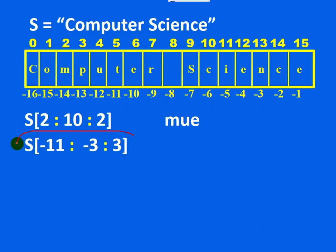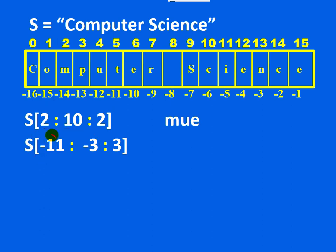What is the output of this next statement? The slicing operator is used again, returning a substring starting with index minus 11, ending with index minus 3 minus 1, which is minus 4, in steps of 3. The first character returned is at index minus 11.